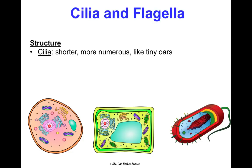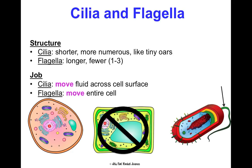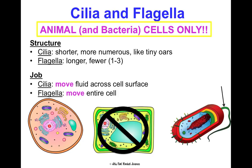Cilia are like little tiny hairs — shorter and more numerous, like tiny oars on the outside of a cell that move fluids across the cell surface. Flagella are longer and fewer, about one to three, and look like tails or whips that move the entire cell. Cilia exist in places like your throat cells to move fluids. Flagella are found on sperm cells, helping them move to reach an egg. These structures are found in animal cells and prokaryotic cells, not in plant cells.